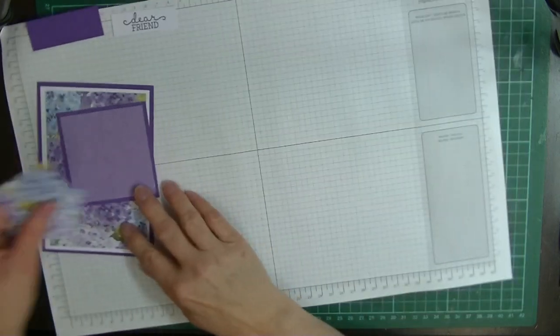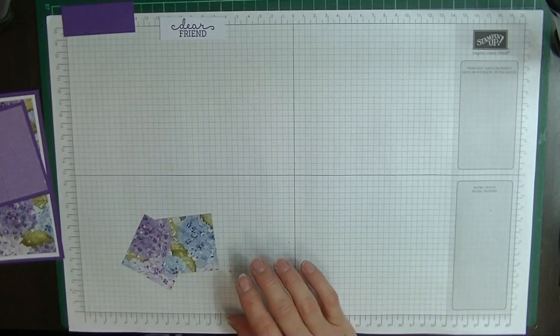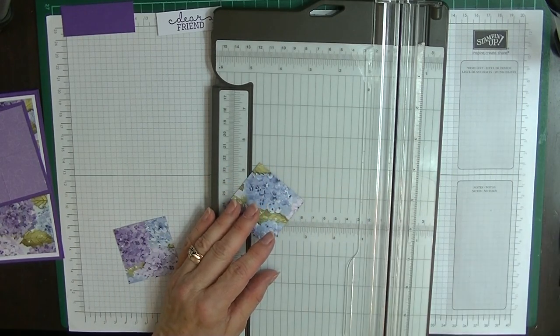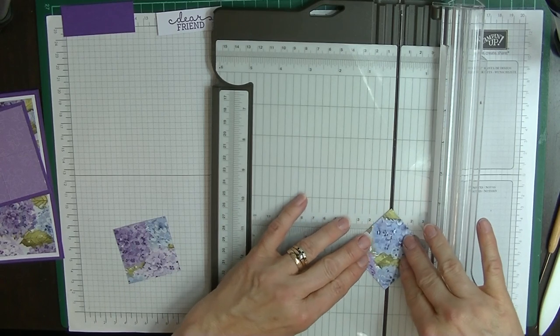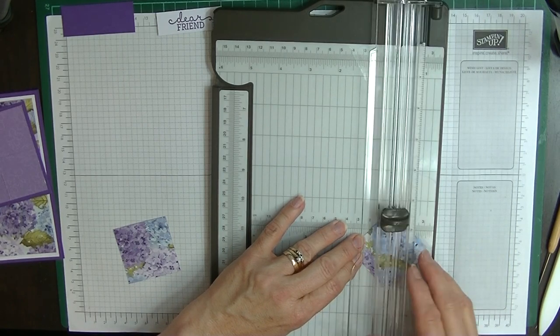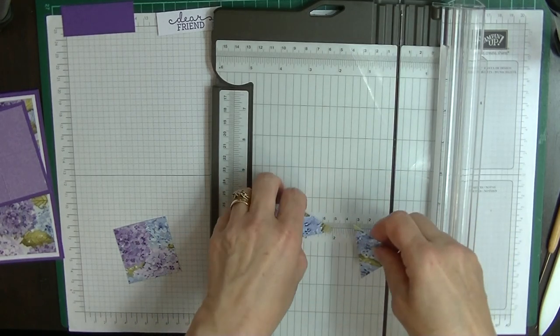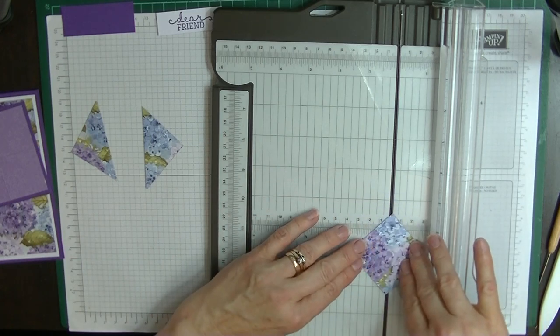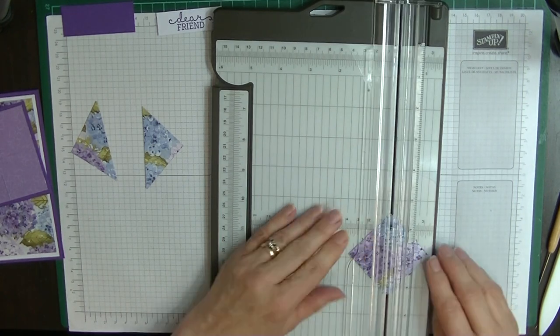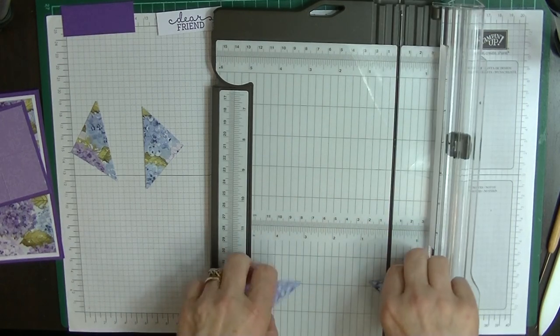Now we're going to pop that on one side and we're going to work on our pinwheel. Believe it or not, this makes our pinwheel, these two pieces of two inch by two inches. We're going to bring in our cutting trimmer or you can use a pair of scissors if you wish. I prefer to use my trimmer only because I find it easier. I'm going to pop this in corner to corner as you can see there. I'm just going to cut that down the middle like so. I'm going to do that with both pieces.